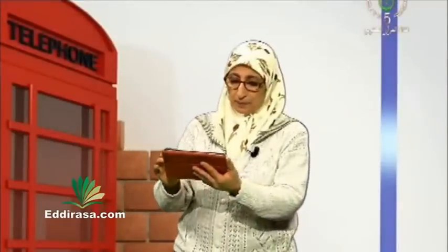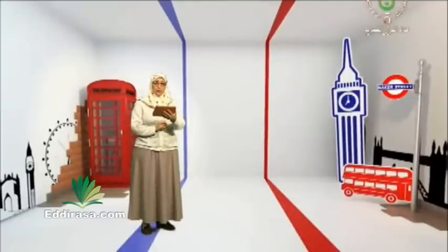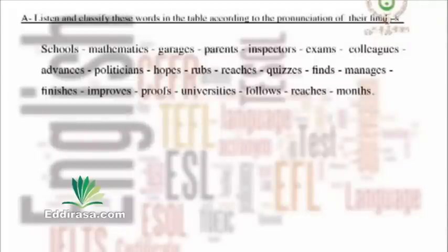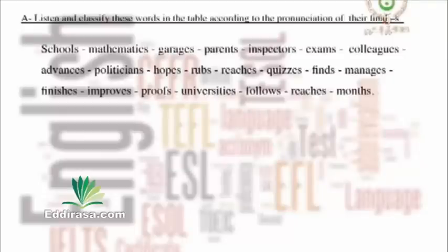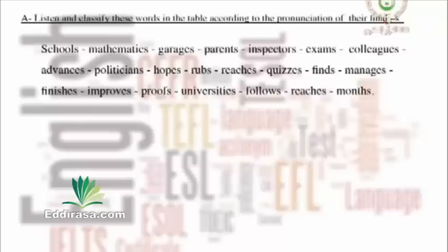We'll deal with how to pronounce the final S. Listen carefully — Mr. Dahmas is going to read a series of words. Pay attention to the final S and then classify each word in the table according to its pronunciation: it can be heard as /s/, /z/, or /ɪz/. The words are: schools, mathematics, garages, parents, inspectors, exams, colleagues, advances, politicians, hopes, raps, reaches, quizzes, fines, manages, finishes, proofs, universities, follows, reaches, months.